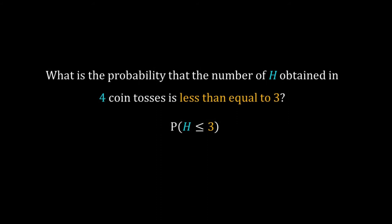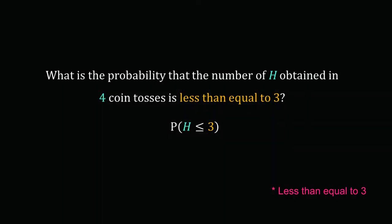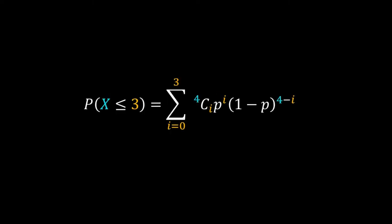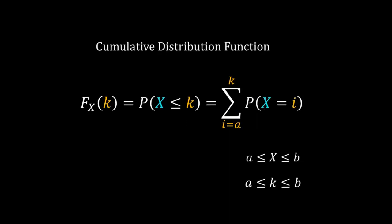Let's ask another question: what is the probability that the number of heads obtained in four coin tosses is less than or equal to 3? That equals the probability of 0 heads plus probability of 1 head plus probability of 2 heads plus probability of 3 heads. You can calculate each using the PMF of the binomial distribution and then add them. In general, the probability that a random variable X is less than or equal to k is called the cumulative distribution function, or CDF.